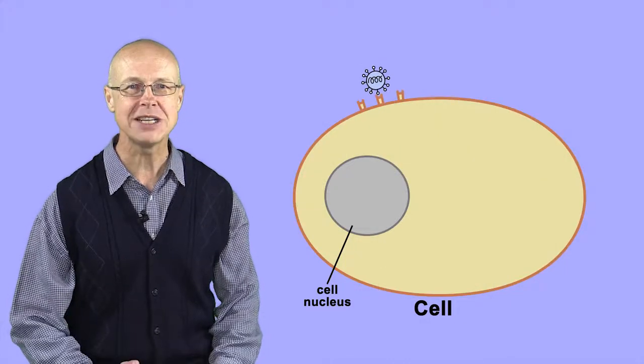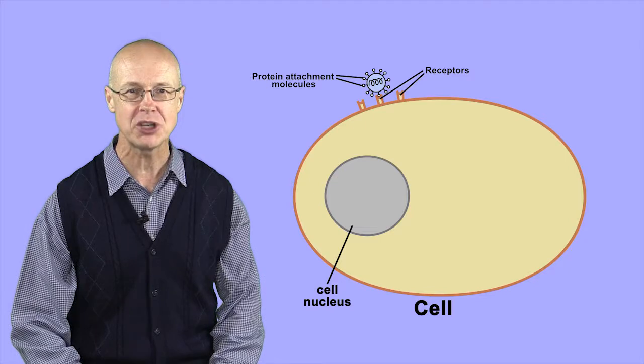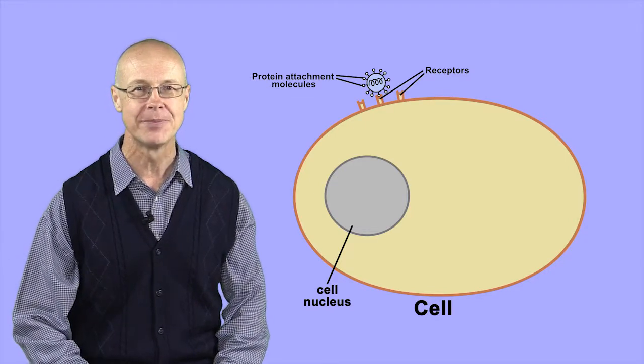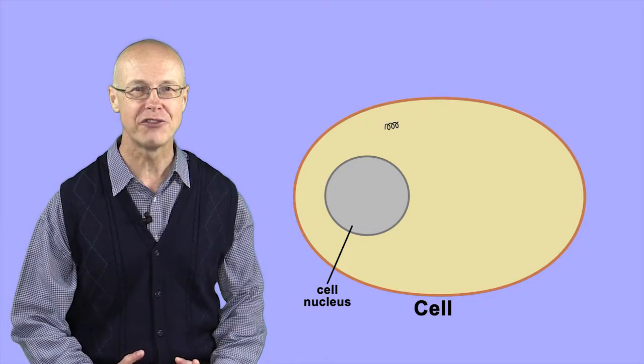A virus has protein molecules on its outside that can attach to specific receptor molecules on the surface of the living cell it's going to invade. The virus penetrates the cell, the protein coating of the virus is removed,